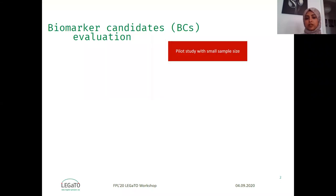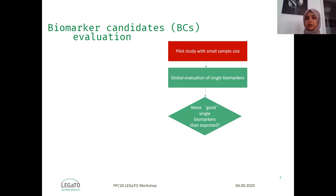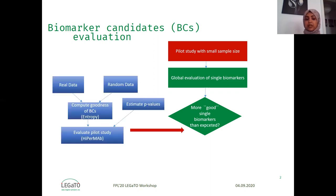In such studies, and due to time and cost reasons, researchers often prefer to start with a small sample size pilot study. The first step in this workflow of biomarker studies is to evaluate single biomarkers and indicate how many good biomarkers a dataset contains compared to the pure random effect — and that's what HyperMap does.